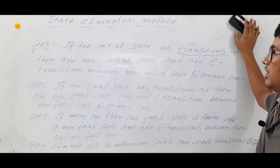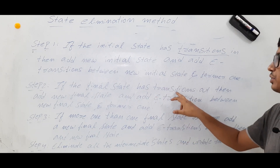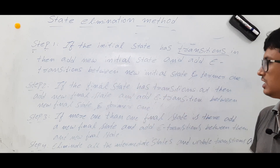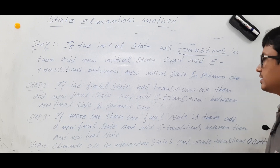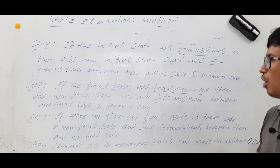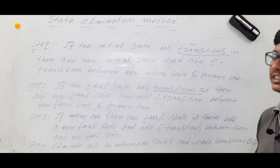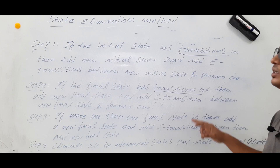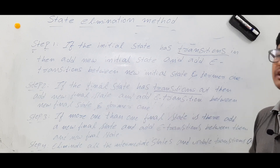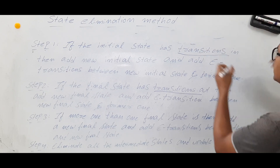Now we will discuss step two. If the final state has transitions out — meaning if the final state has an outgoing edge — then add a new final state and add an epsilon transition between the new final state and the former one.